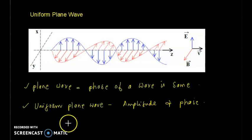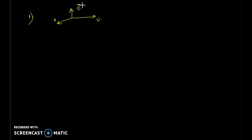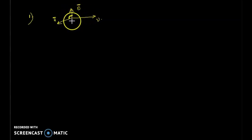There are some properties for uniform plane waves. Property number one: at every point in space, the electric field E and the magnetic field H are perpendicular to each other — these vectors should be orthogonal to each other — and also to the direction of travel. So these two vectors should also be perpendicular to the direction of propagation.